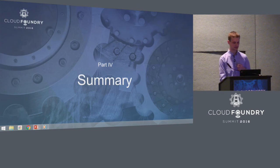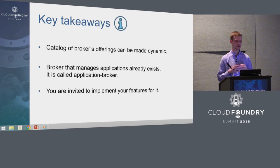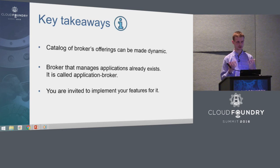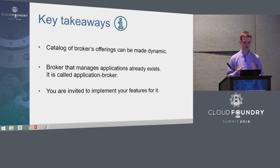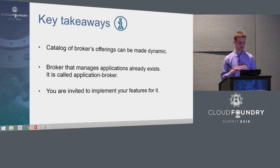Let me summarize the points I want you to remember. First, we are able to make the catalog of broker offerings dynamic. Almost always, brokers come up with static lists of offerings that are hard to extend. But just by extending the existing service broker API, you can end up with a dynamic version of the catalog. And remember that a broker that manages applications already exists — it is called Application Broker, built by Intel developers, and you are invited to implement new features and use it.